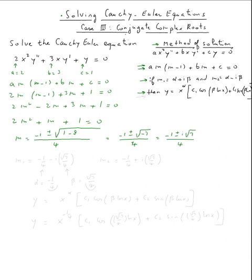So m one equals negative one over four minus i square root seven over four. And m two is negative one over four plus i square root seven over four.